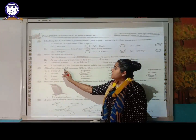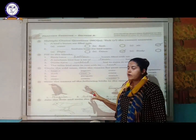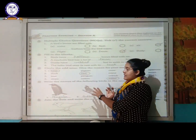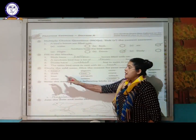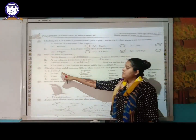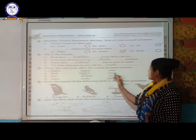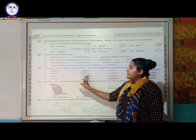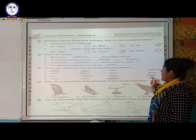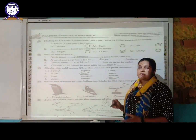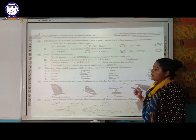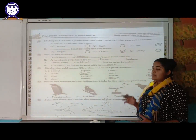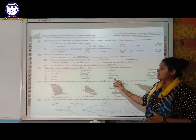Circle the odd one out: Bear, pigeon, crow, and sparrow — bear is the odd one out as pigeon, crow, and sparrow are birds. Duck, nest, crane, and swan — nest is the odd one out as duck, crane, and swan are aquatic birds. Kiwi, penguin, ostrich, and dog — dog is the odd one out as kiwi, penguin, and ostrich are flightless birds. Straw, cotton, water, and grass — water is the odd one out as straw, cotton, and grass are nest-building materials.